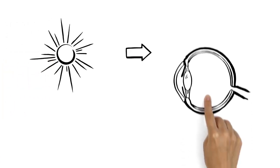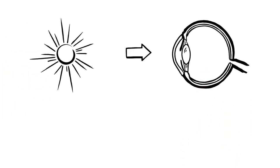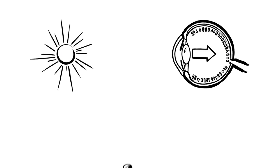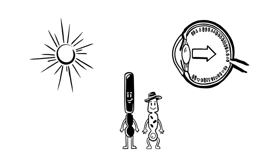The essential prerequisite is light. When it enters the eye, it first passes through the lens and the vitreous body before reaching the retina. There, it encounters millions of tiny photoreceptor cells with different jobs.